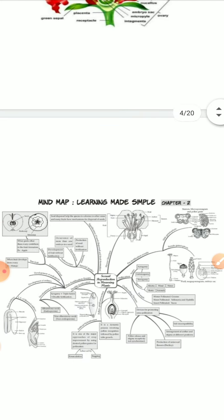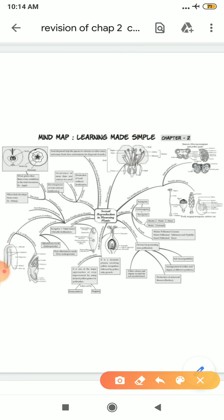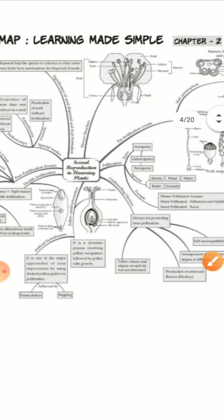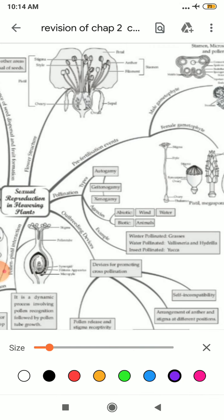This is the mind map of your chapter on sexual reproduction in flowering plants. I will take it one by one, making it zoom so that you can visualize it carefully. First of all, what we had studied — we had studied about the flower structure.